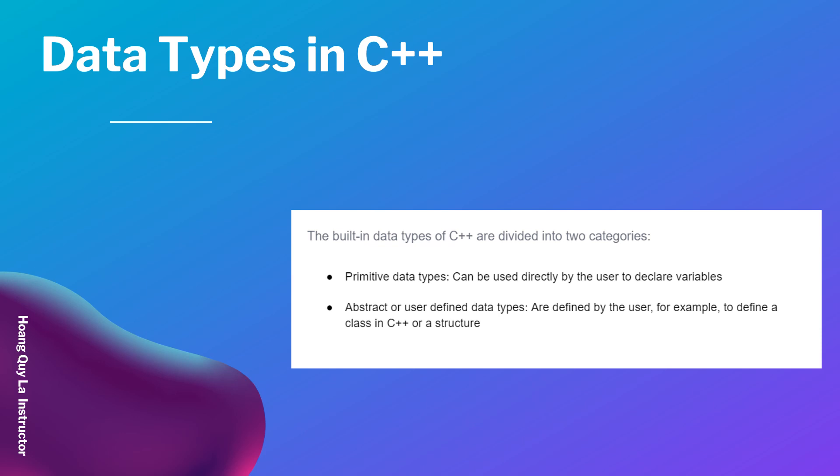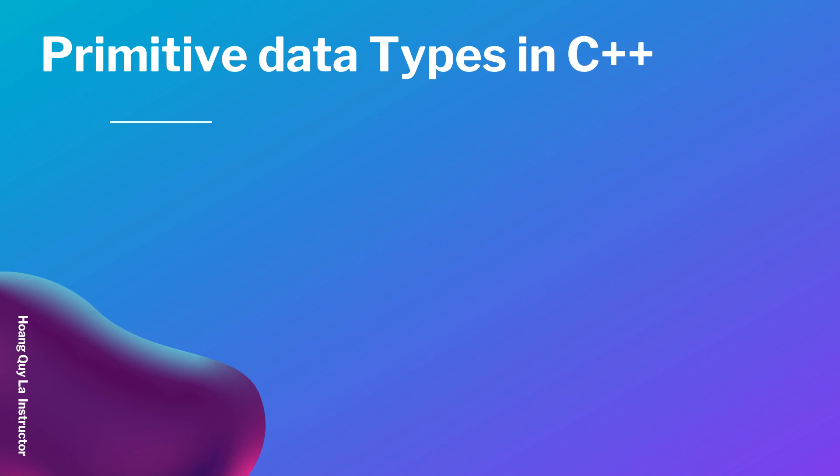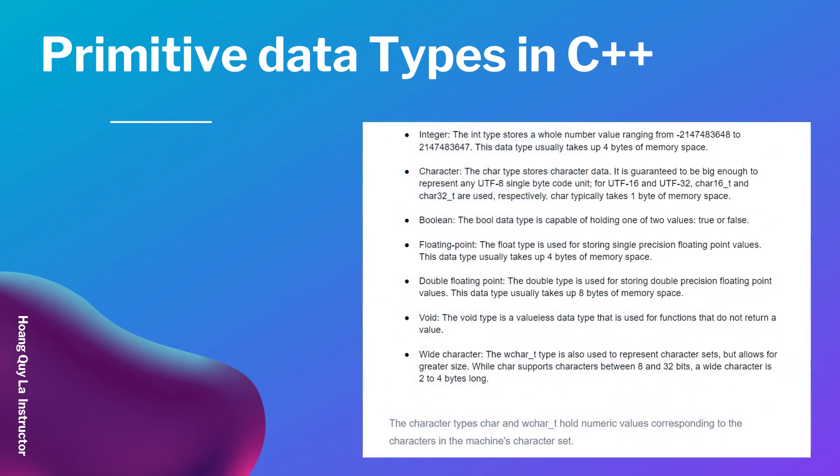Now let's talk about the primitive data types in C++. It has many types. The first one is the integer — the int type stores a whole number value ranging from approximately negative two billion to positive two billion.